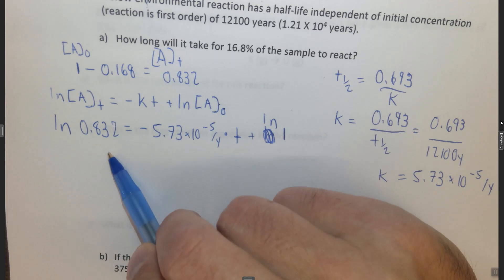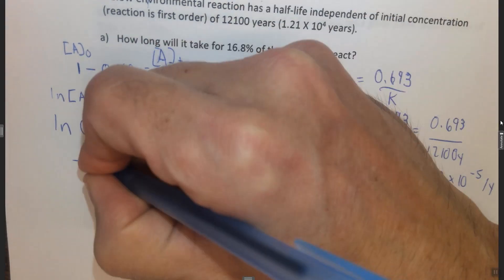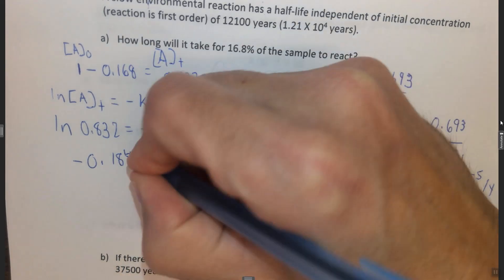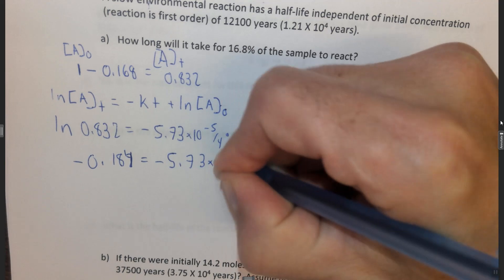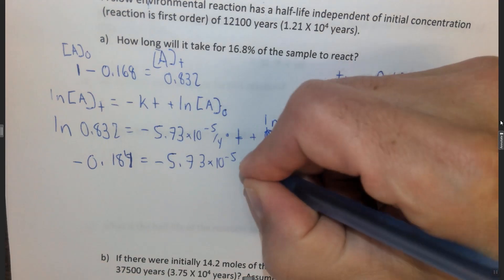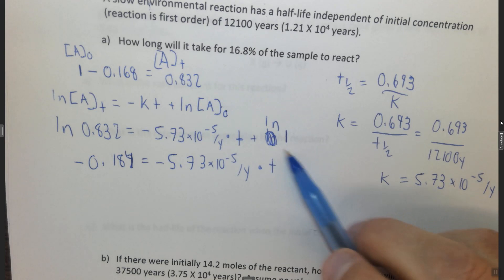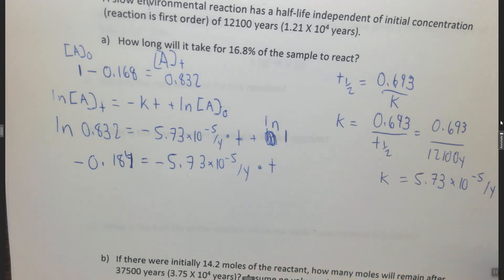So the ln of 0.832 is negative 0.184, you just do that in your calculator, equals negative 5.73 times 10 to the minus 5 per year times T. Again, the ln of 1 disappears because the ln of 1 is 0, so it would be plus 0, which you don't need to write.